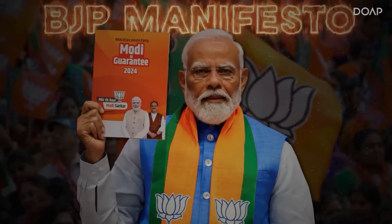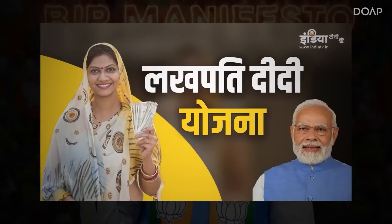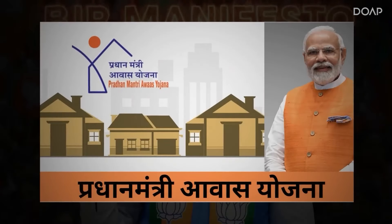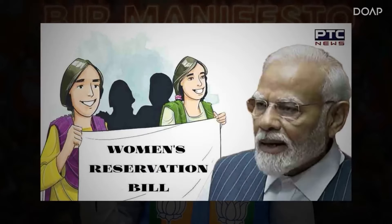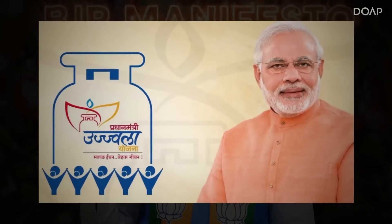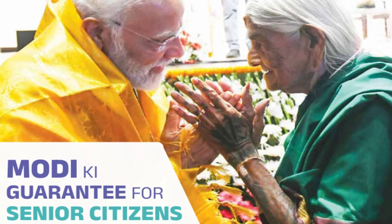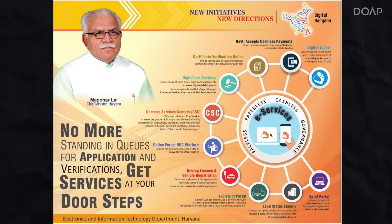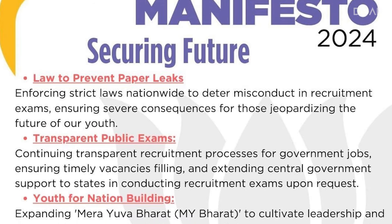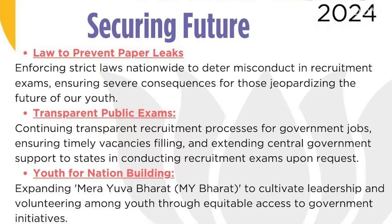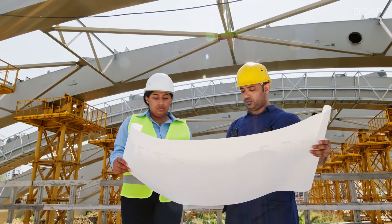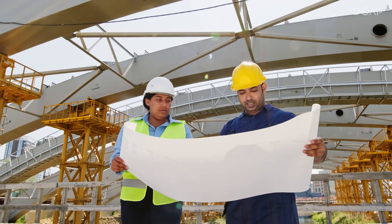If you talk about BJP, they reintroduce all their existing schemes which were also in their old manifesto, and want to promote them more aggressively in the next tenure. There are only four changes in BJP's manifesto: one, a portal for senior citizens to share their stories; two, doorstep delivery for senior citizens of any government essentials; three, new laws for paid leave; and four, increased construction and development to provide homes to everyone.